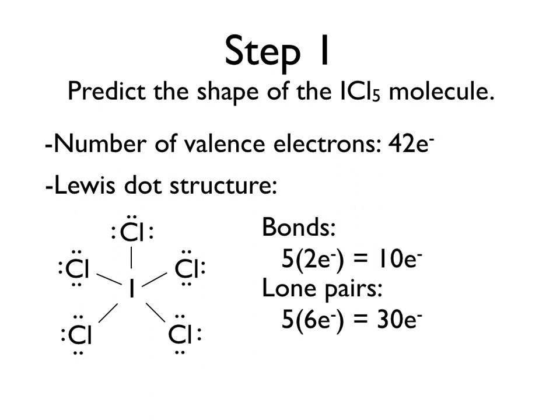So now we've got 10 electrons in our bonded pairs and 30 electrons from our lone pairs, which gives us a total of 40 electrons. However, we're supposed to have 42 valence electrons, so we need to find another place for those additional two electrons. There's no reason to add them to any of the chlorines since they're all equivalent, and we don't want to expand any of their octets. But since iodine is a bigger atom, and its octet is already expanded, we're going to place that extra lone pair on iodine, giving us a total of 42 electrons and a satisfactory Lewis dot structure.